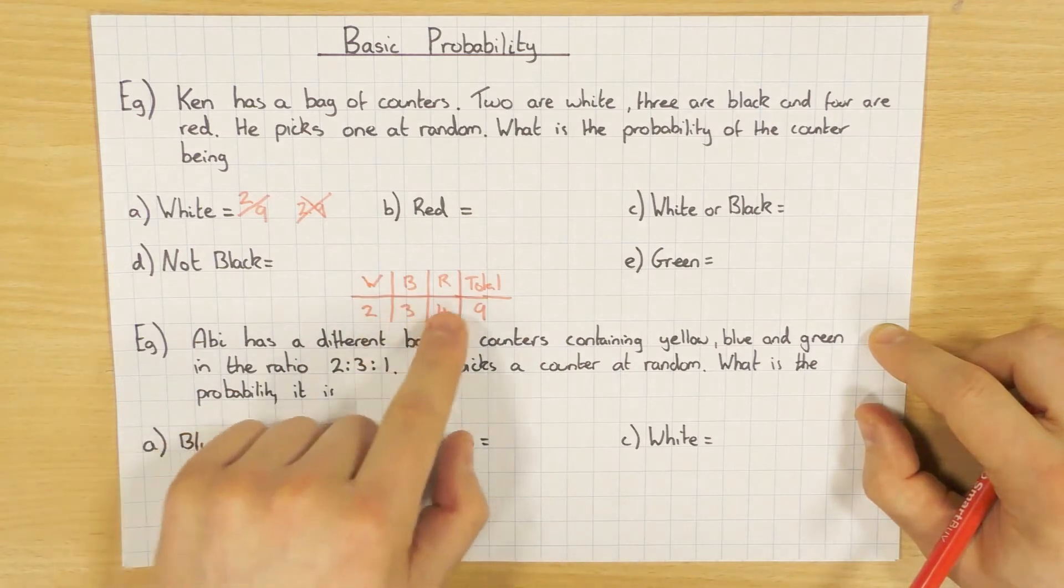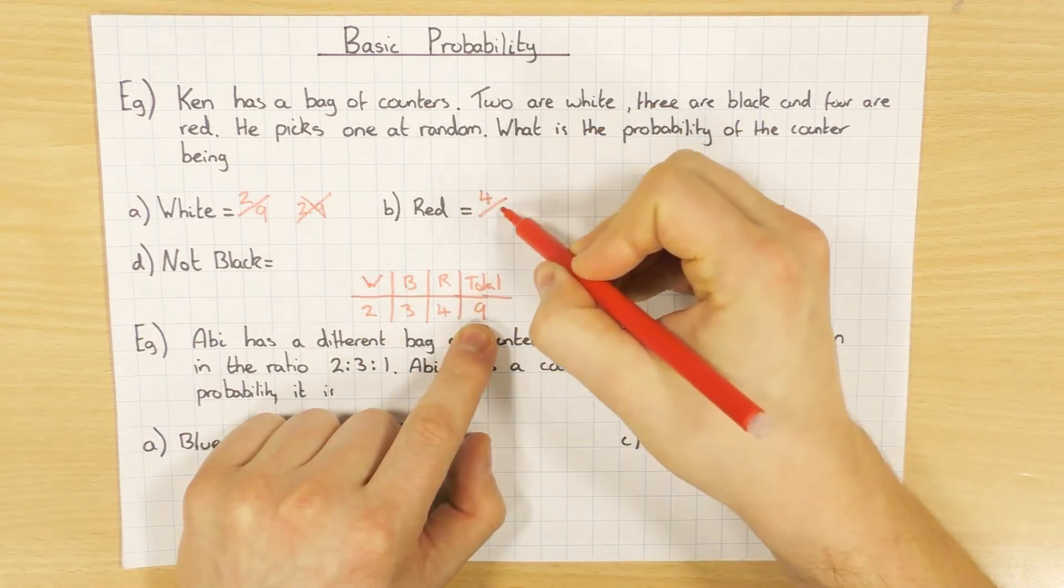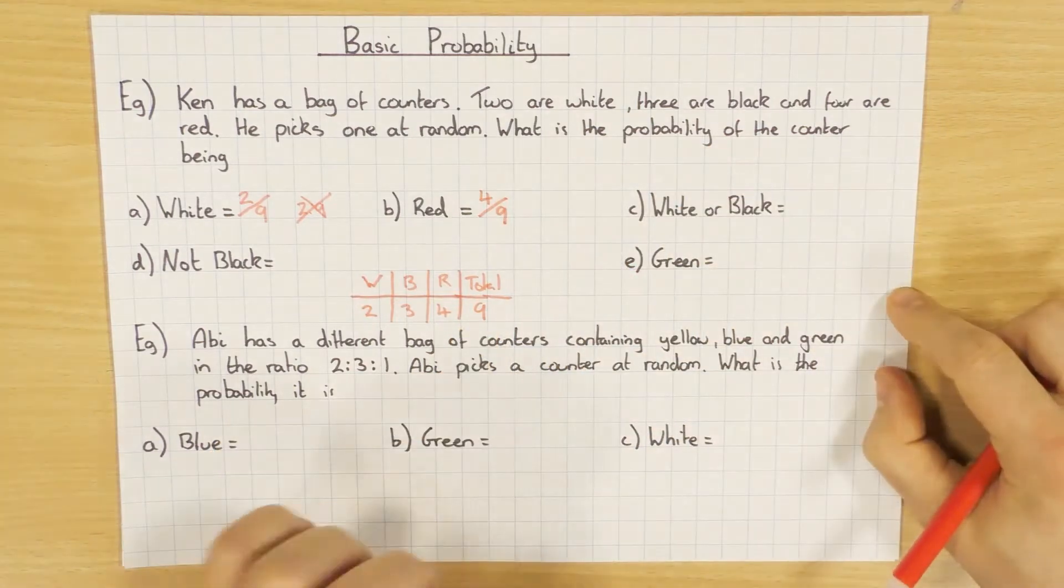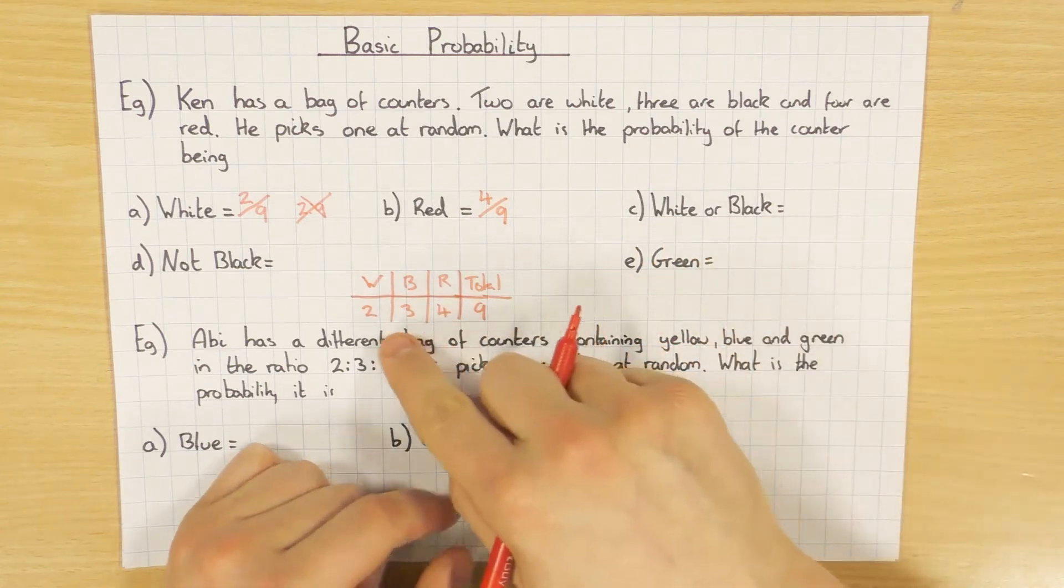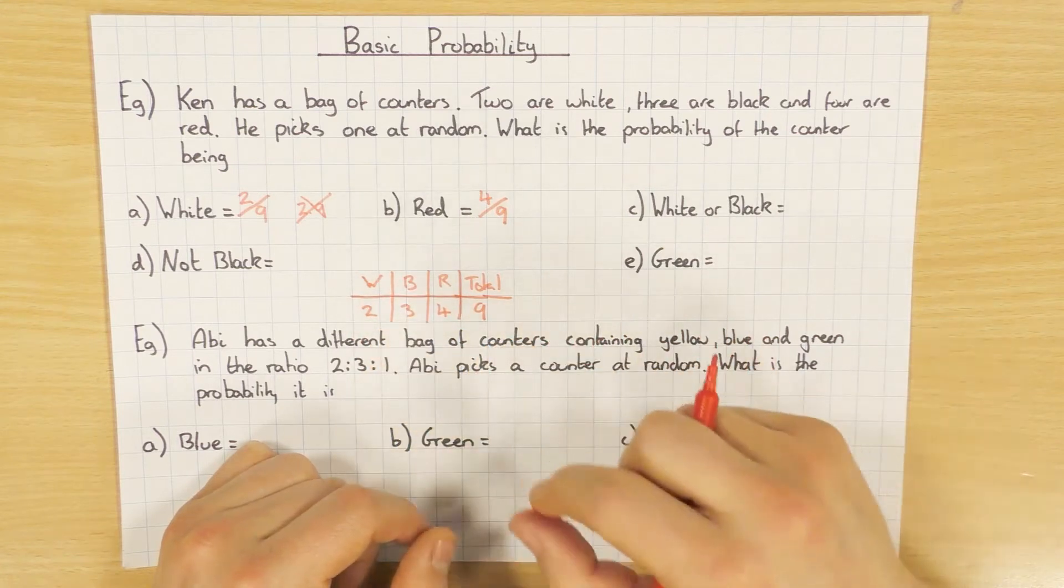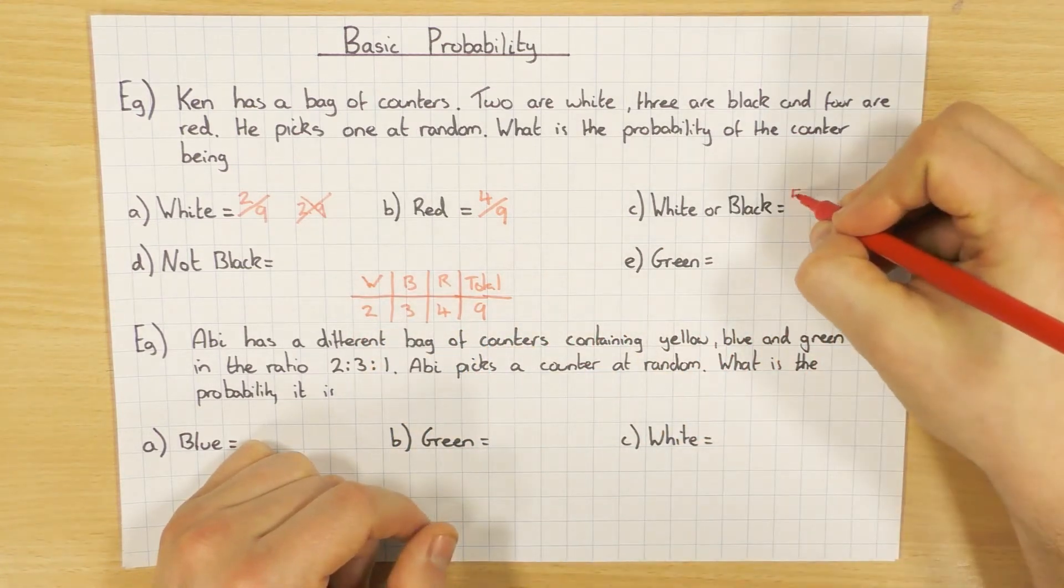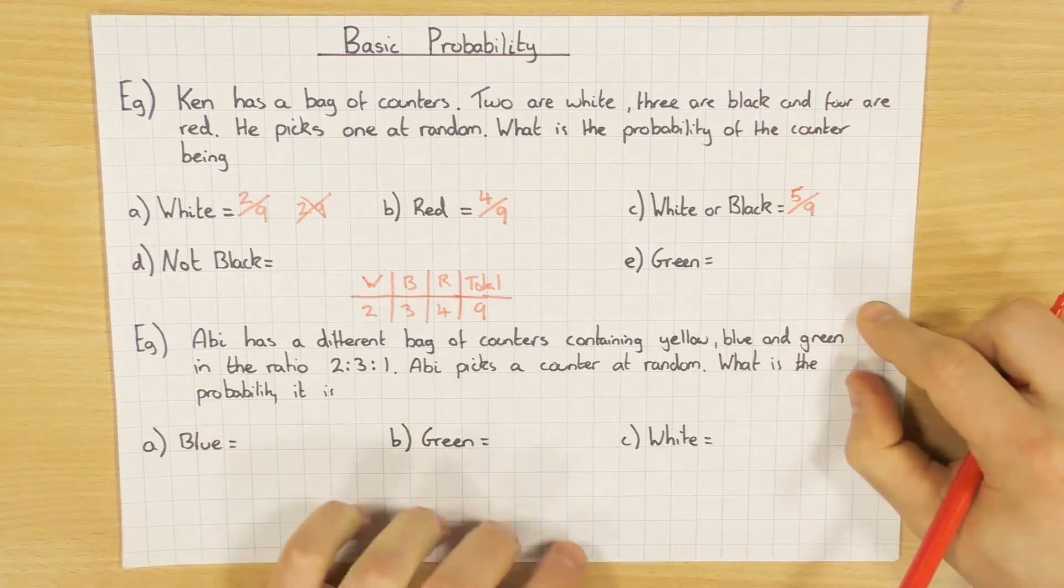So what's the probability of getting a red? Well, that's four out of a total of nine possibilities. So it's what you want out of the total. This one here, white or black. Well, two are white and three are black. So that's five. So I want five possibilities out of the total of nine.